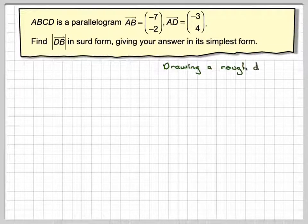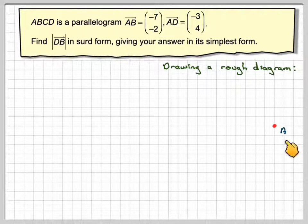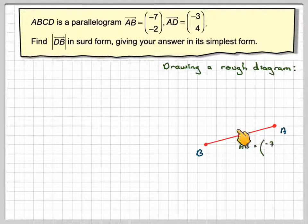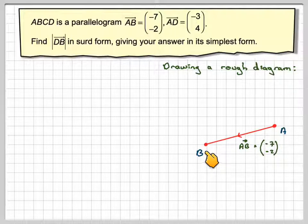One way to approach this is to draw a rough diagram. So if we put on point A, then the vector AB is back 7 and then down minus 2. So that's back 7, down 2, which will be there. This is just a rough diagram to give us an idea.